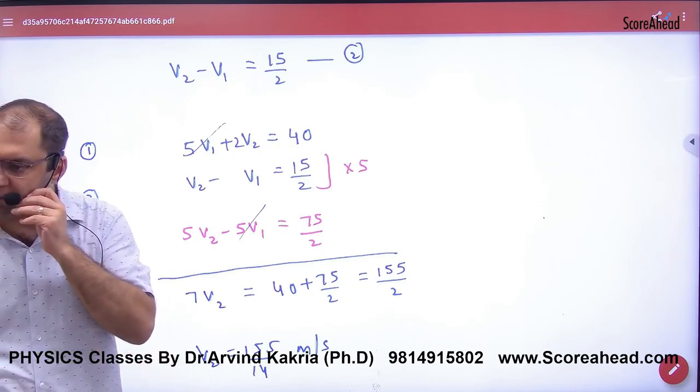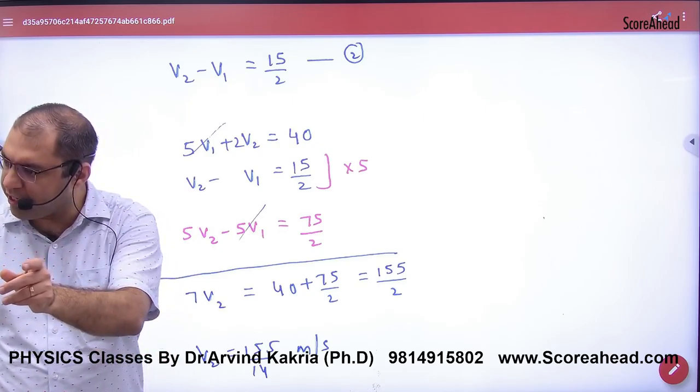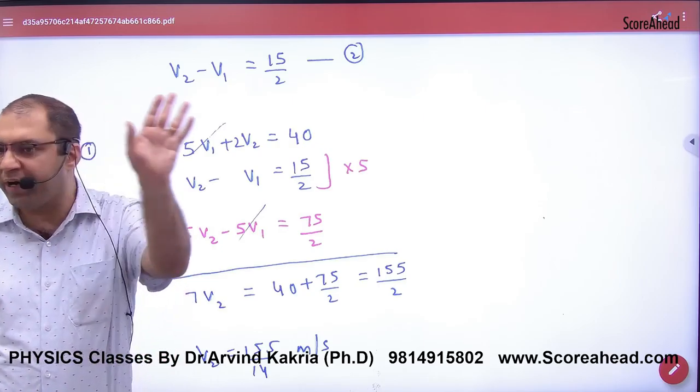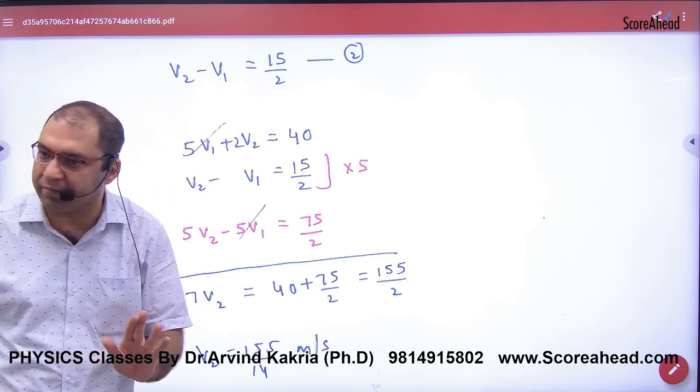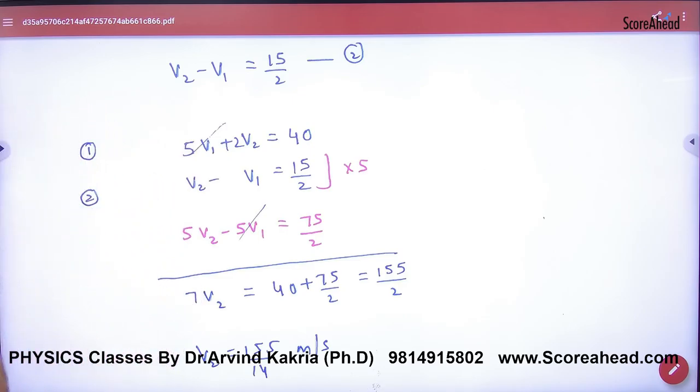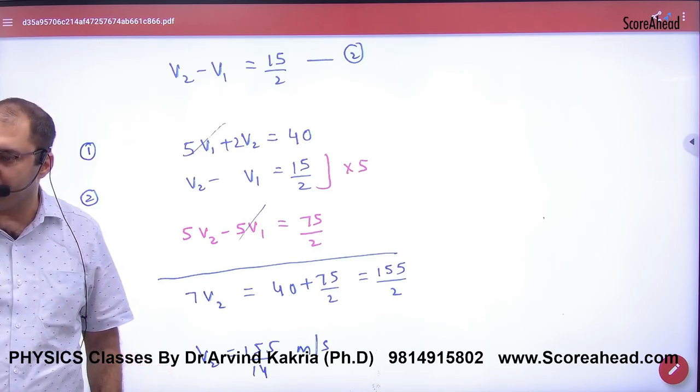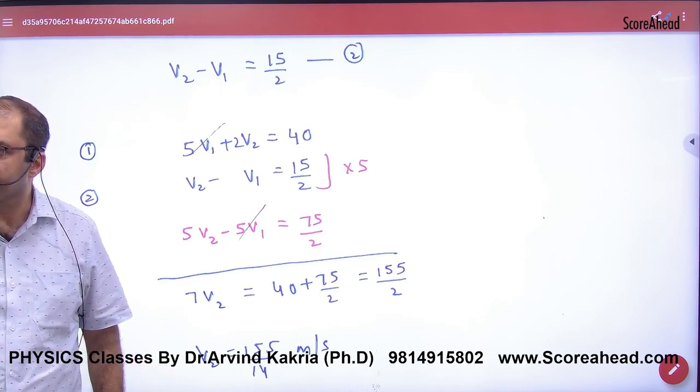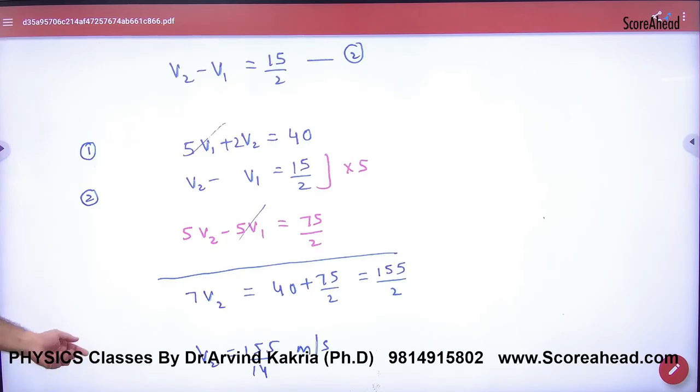So there's no formula, nothing. In this, simple momentum conservation and restitution. Is this point clear to everyone? How to do this? Okay? So it's easy. If elastic collision comes later, then there are big formulas. But if inelastic collision comes, then two equations: one of momentum conservation and one of restitution. Clear?